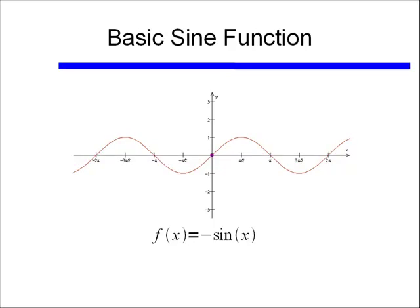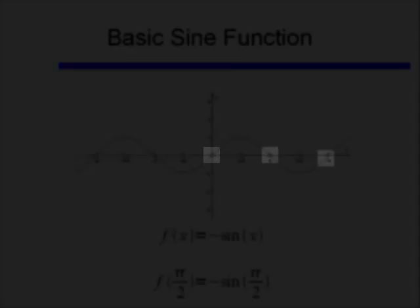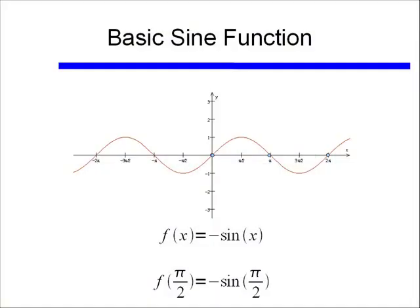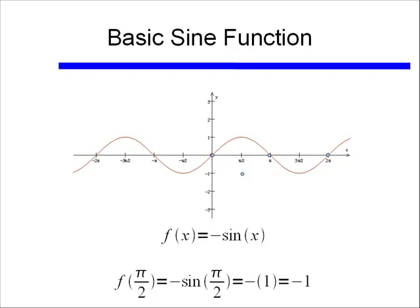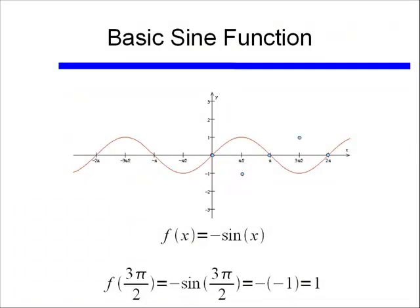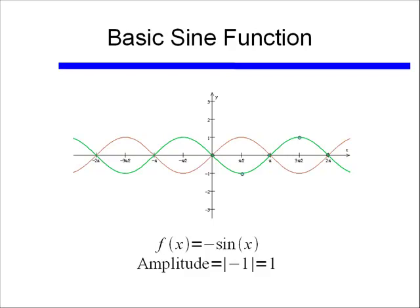One last example: what if I have negative sine x? The points at 0 are still 0. At π/2, f(π/2) = negative sine of π/2. Sine of π/2 is 1, so negating that gives negative 1. At 3π/2, I have negative sine of 3π/2, which equals negative negative 1, or positive 1. Connecting those dots, I end up reflecting the sine function over the x-axis. The amplitude is always positive, so the absolute value of negative 1 equals 1 — the amplitude is 1.